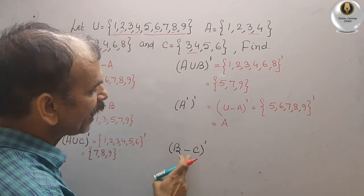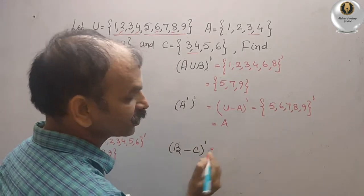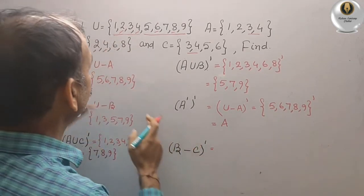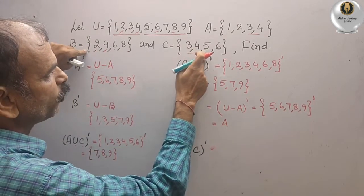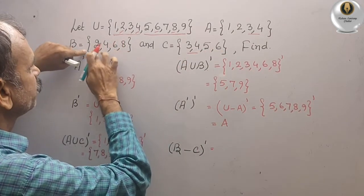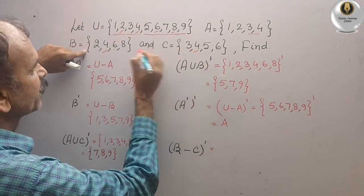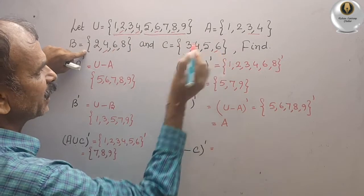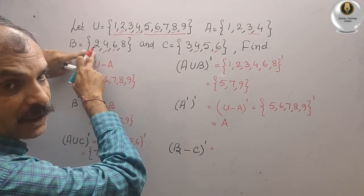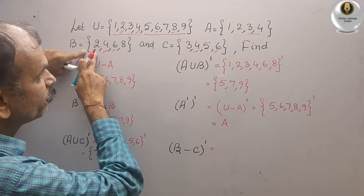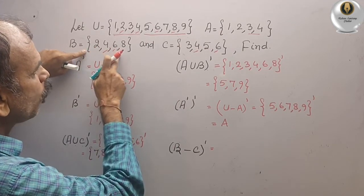Next, B minus C complement. First we find B minus C. B = {2, 4, 6, 8} and C = {3, 4, 5, 6}. We can see 4 and 6 are common. Since B is the master set for minus, we remove the common elements from B. The remaining elements in B are {2, 8}.